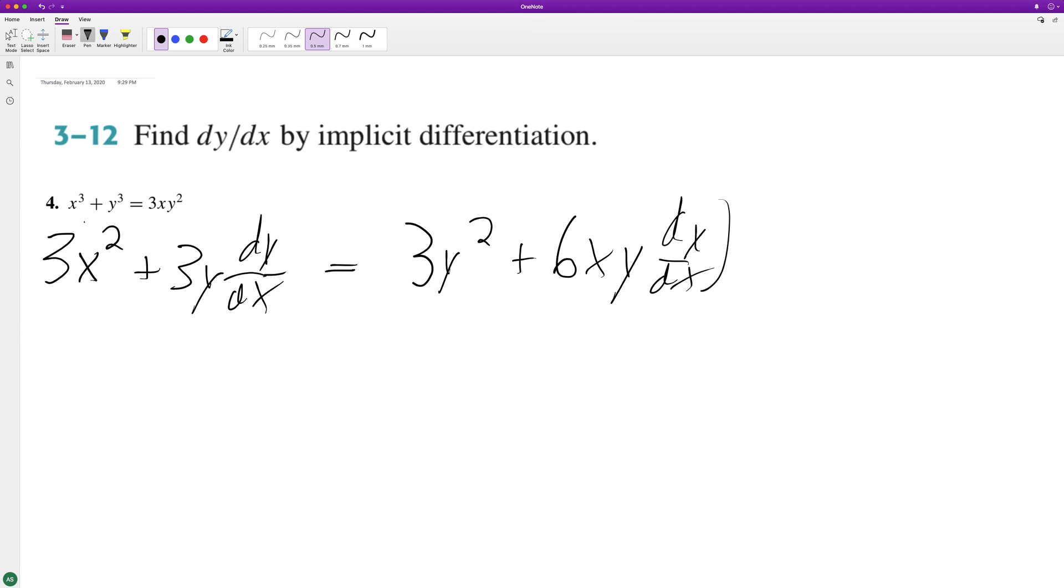So get all the y's on one side. So we'll have 3y dy dx minus 6xy dy dx is equal to 3y squared minus 3x squared.